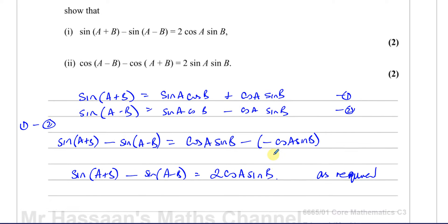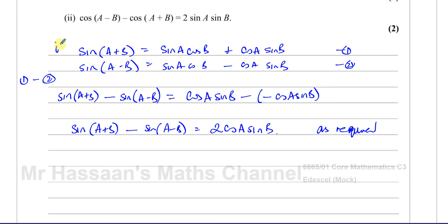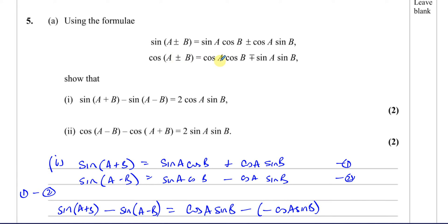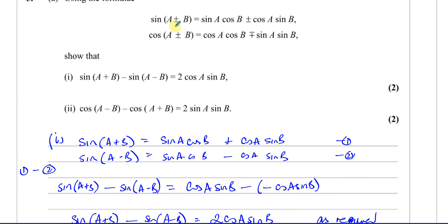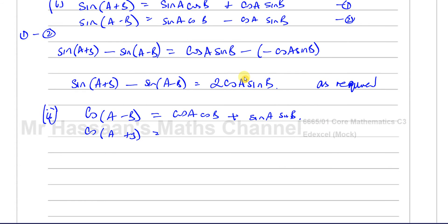Part 2 is about cosine. We need to find cos(a-b) - cos(a+b). Writing down cos(a-b): using the pattern, cos(a-b) = cos(a)cos(b) + sin(a)sin(b). And cos(a+b) is the same except when there's a plus between the angles, there's a minus between the terms: cos(a+b) = cos(a)cos(b) - sin(a)sin(b).